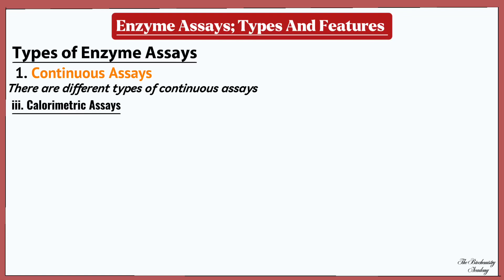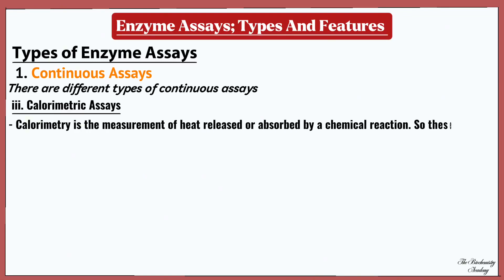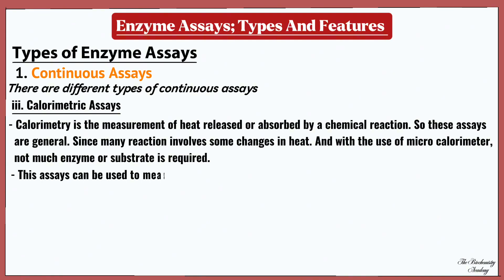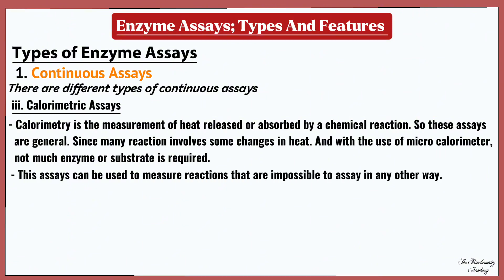The next type of continuous assay is the calorimetric assay. Calorimetry is the measurement of heat released or absorbed by a chemical reaction. These assays are general since many reactions involve some change in heat, and with the use of a microcalorimeter, not much enzyme or substrate is required. This assay can be used to measure reactions that are impossible to assay in any other way.